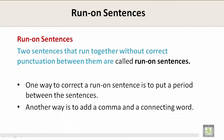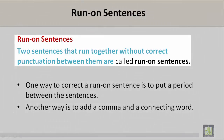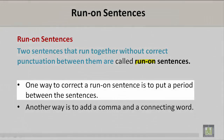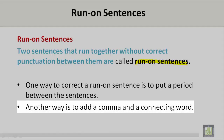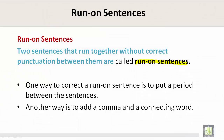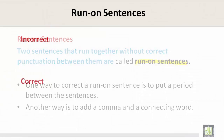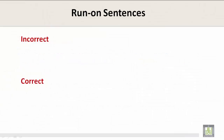Run-on sentences. Run-on sentences are two sentences that run together without correct punctuation between them. One way to correct a run-on sentence is to put a period between the sentences. Another way is to add a comma and a connecting word.